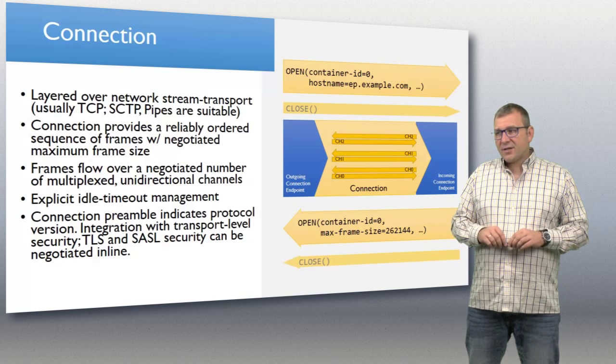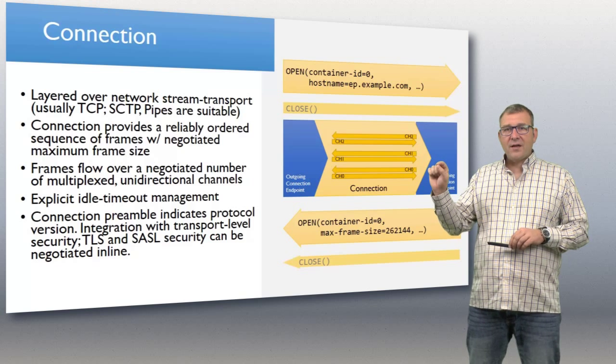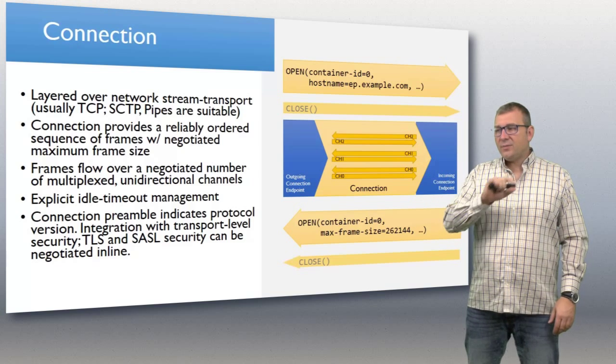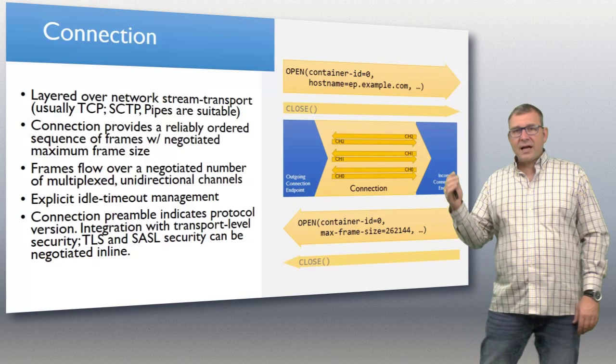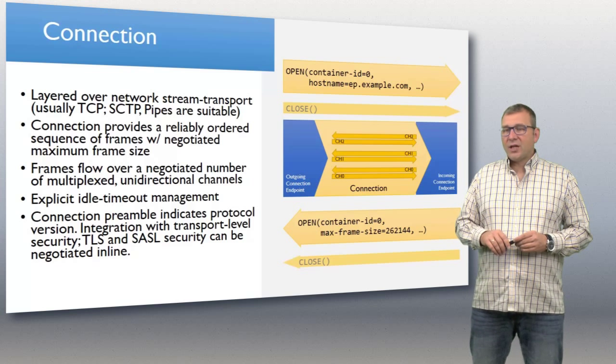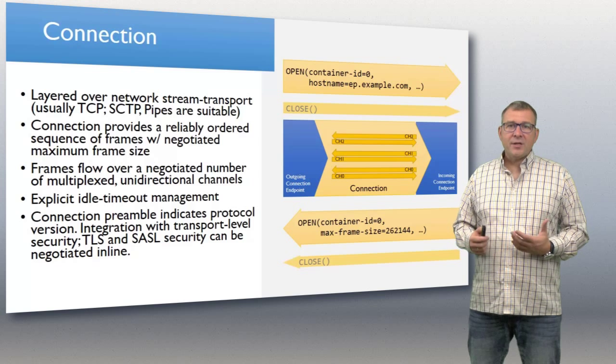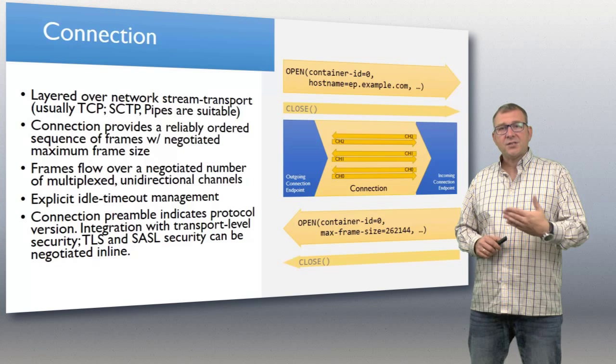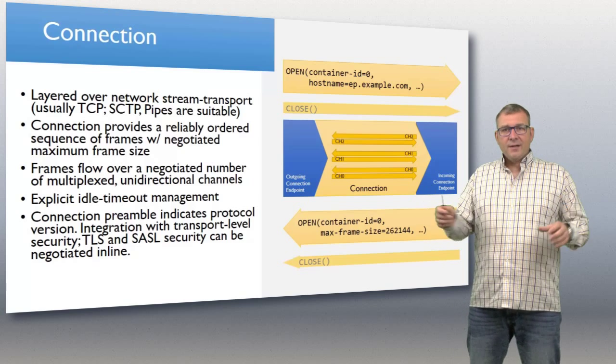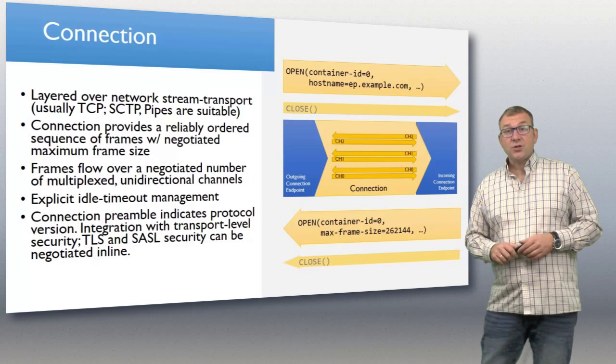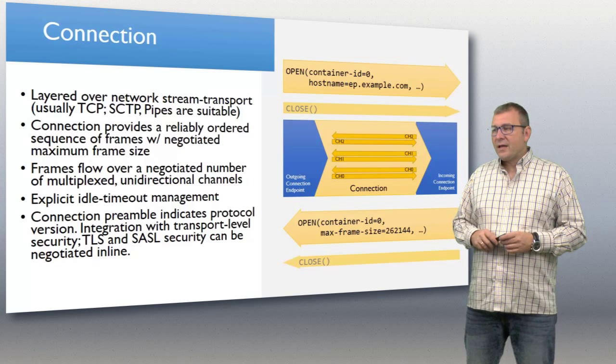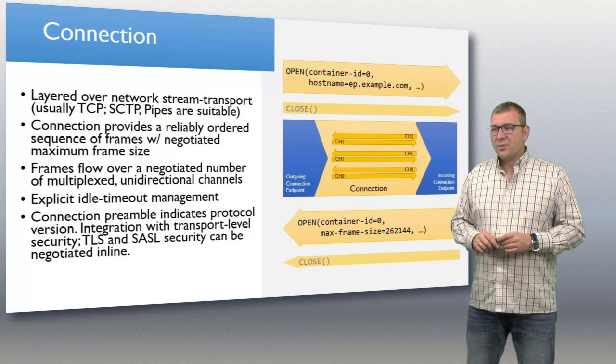The connection is opened with the first frame that flows on the connection. You create your foundational connection. You open it up by telling the other party what your container ID is, and it communicates that back to you with the reply. You tell it what the host name is, which is equivalent to server name indication on TLS or the host header in HTTP. So if there's a routing infrastructure that deals with the raw socket but then wants to dispatch to particular hosts, you can do that by having that host name in there. It also communicates that maximum frame size.